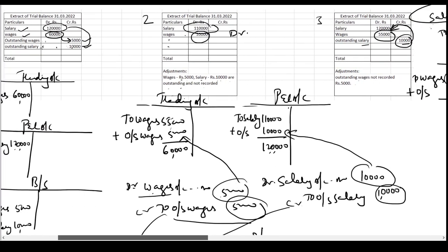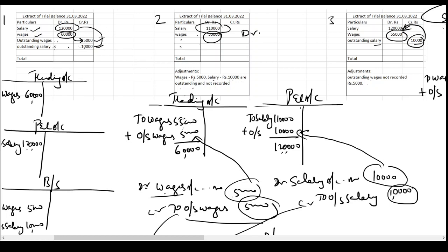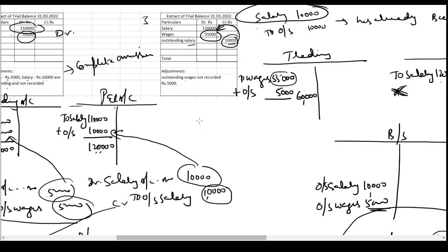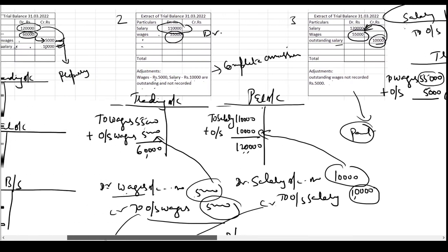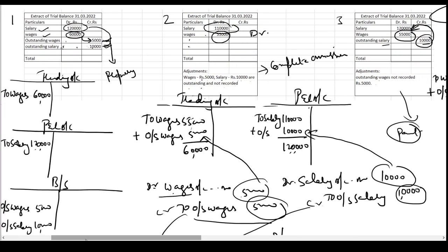Comparing the three situations: in situation one, both outstanding wages and outstanding salaries were properly recorded. In situation two, there was complete omission — neither was recorded. In situation three, outstanding salary was recorded but outstanding wages was not recorded. This is how we deal with outstanding expenses in the final accounts.